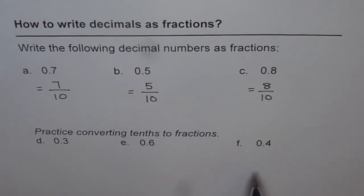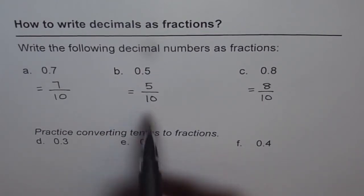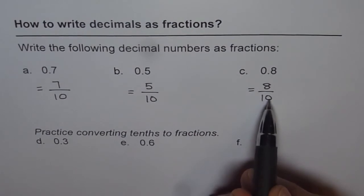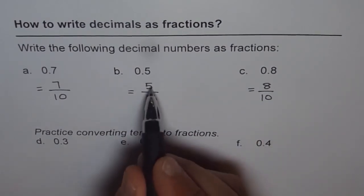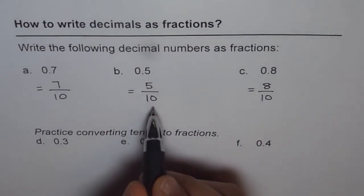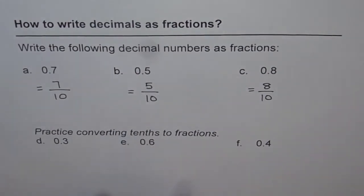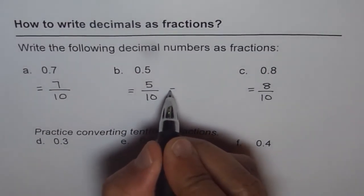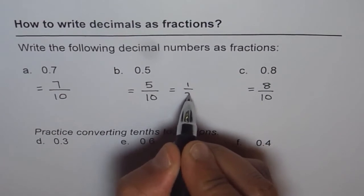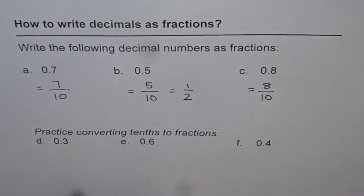Well, some of you can actually simplify these fractions also. For example, five tenths you can divide both by five and write equal in fraction as one out of two. Dividing both by five. That will be a bonus.